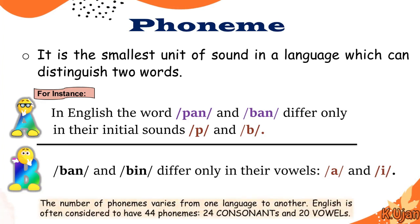The number of phonemes varies from one language to another. English is often considered to have 44 phonemes — 24 consonants and 20 vowels. Each language differs by its phonemes, and in English we have 44 sounds. Each individual sound is known as a phoneme.